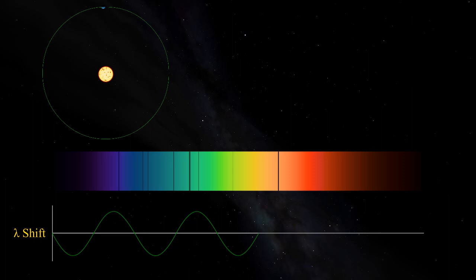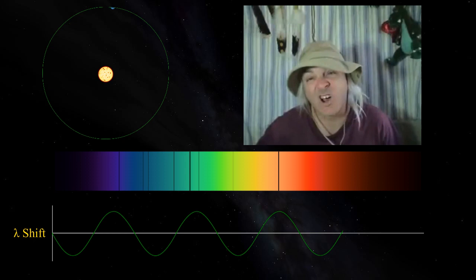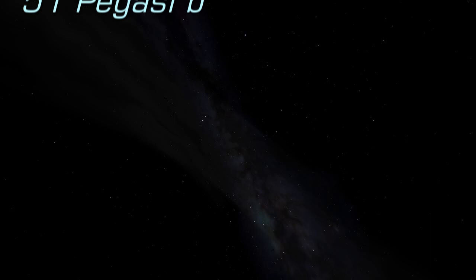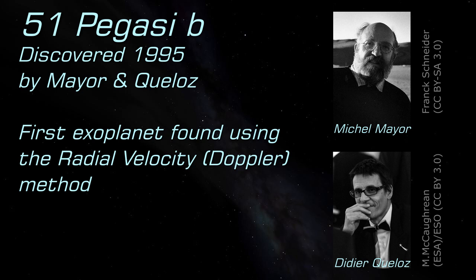The first exoplanet discovered using Doppler spectroscopy was 51 Pegasi b, by Michelle Mayer and Didier Kahlo using the Elodi spectrograph at the Haute-Provence Observatory in southern France. Elodi is capable of measuring velocity shifts of 7 meters per second.